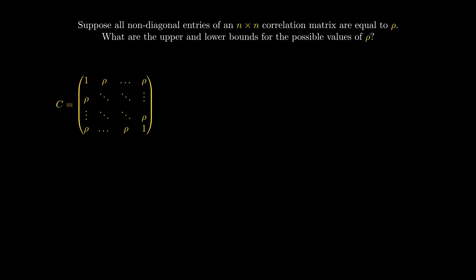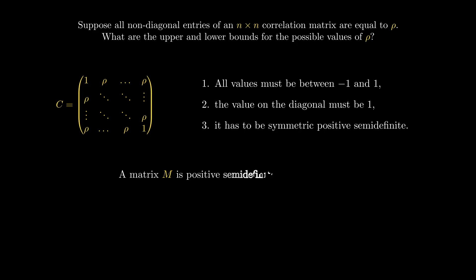Now a correlation matrix has three properties it needs to satisfy. Its values must be between minus 1 and 1, the values on the diagonal must be 1, and it has to be symmetric positive semi-definite. Recall that a real matrix M is positive semi-definite if for any vector X, the number you get by taking X transpose times M times X is greater than or equal to 0.